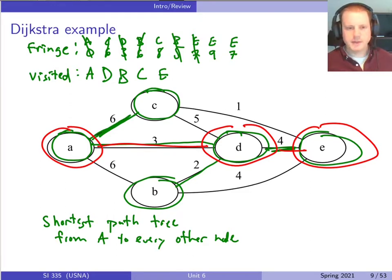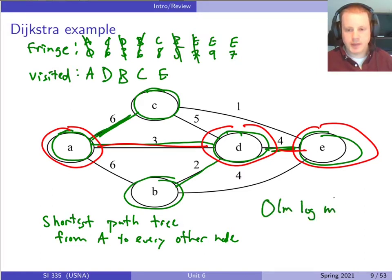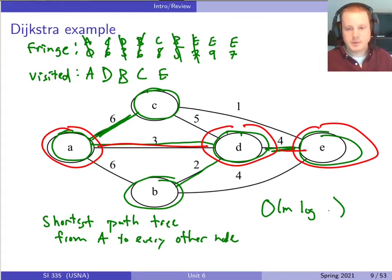Let's think about the running time of Dijkstra's algorithm. For every edge in the graph, we're potentially adding something new to the fringe — that's like inserting something in a heap. The size of the heap is m, so that's something like m log m running time. But m is always at most n squared, so log m is like log of n squared, which is 2 log n. So we usually write the runtime as m log n, where m is the number of edges and n is the number of nodes.